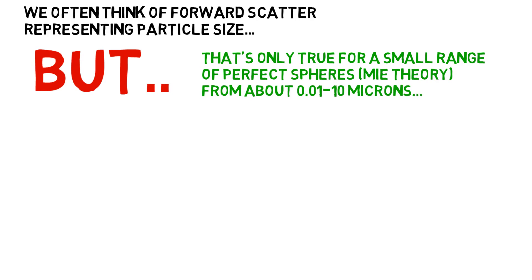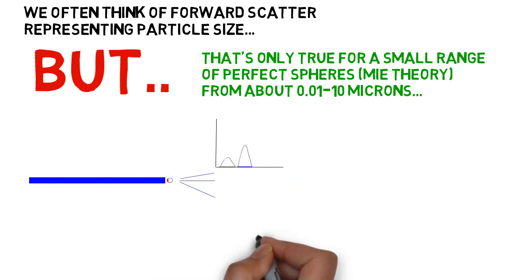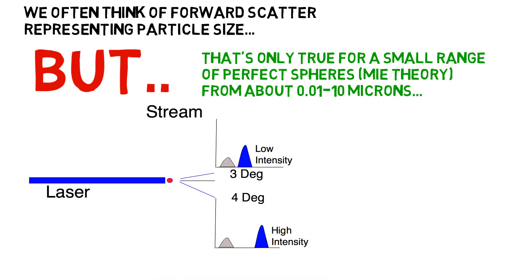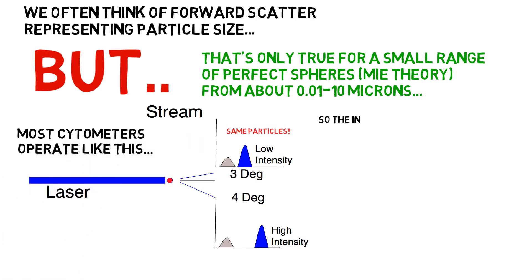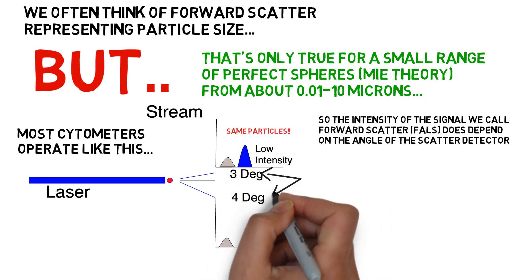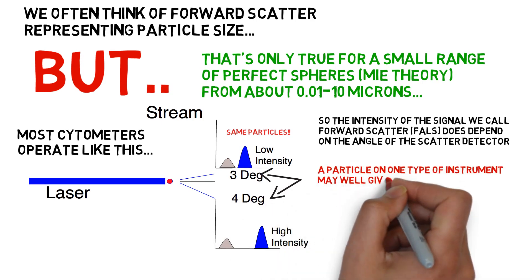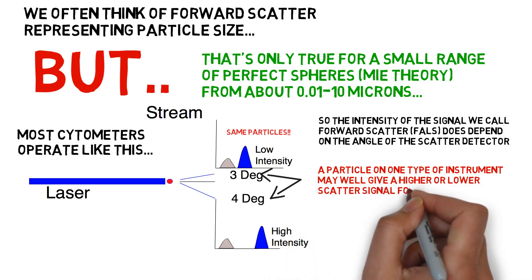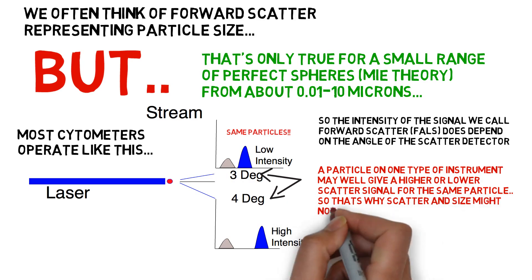When you look at this diagram of how we measure FALS, you can see that the intensity of the signal is dependent on the angle of the forward detector. The 3-degree signal can differ from the 4-degree signal, showing how the angle can make a big difference in signal intensity. Different instruments have different angles of light scatter, which is why they don't all measure particles the same way. This means you often can't compare scatter plots from one brand of instrument to another.